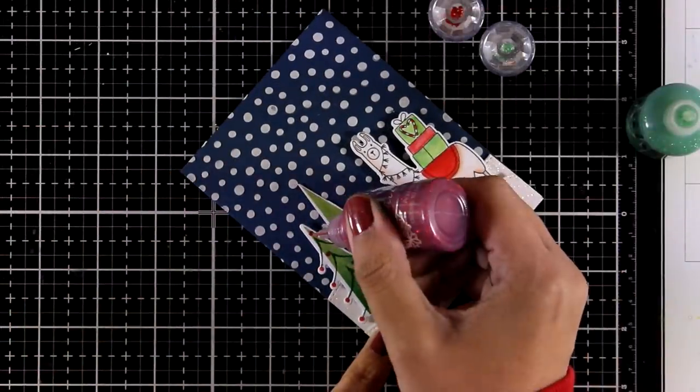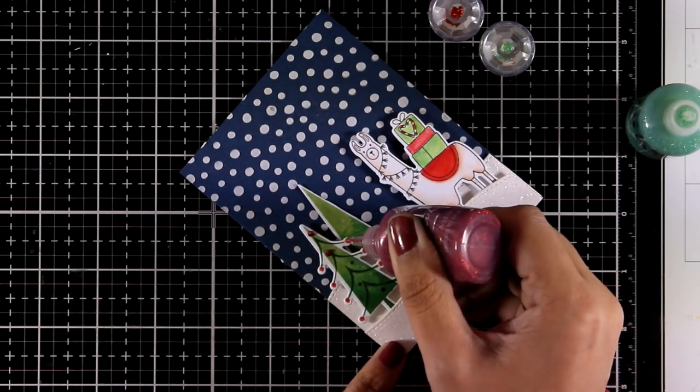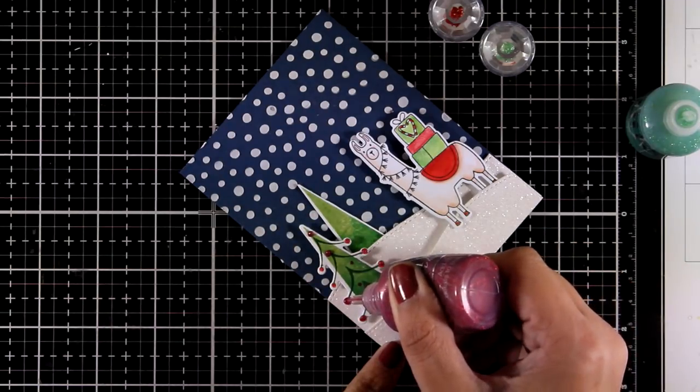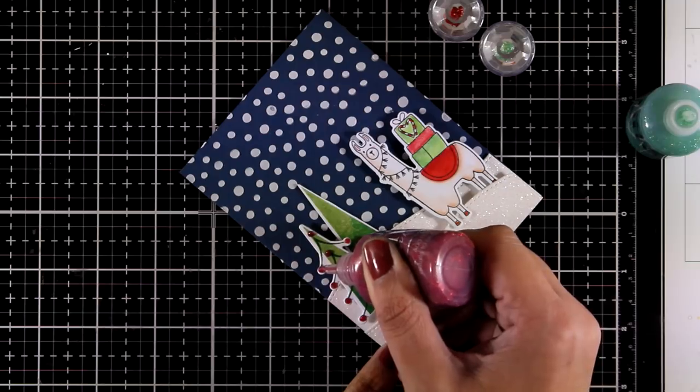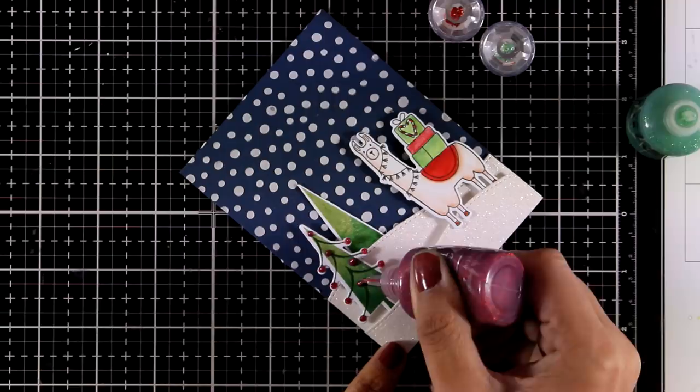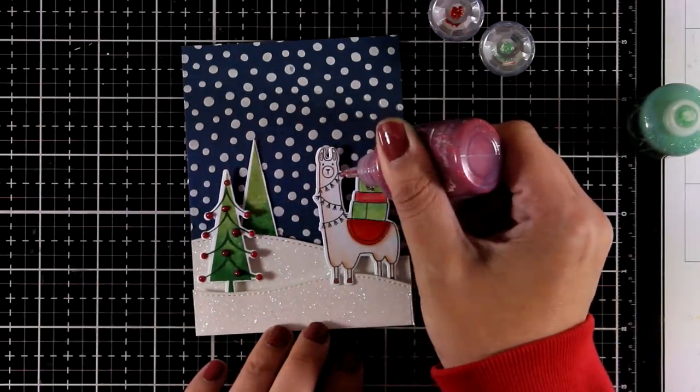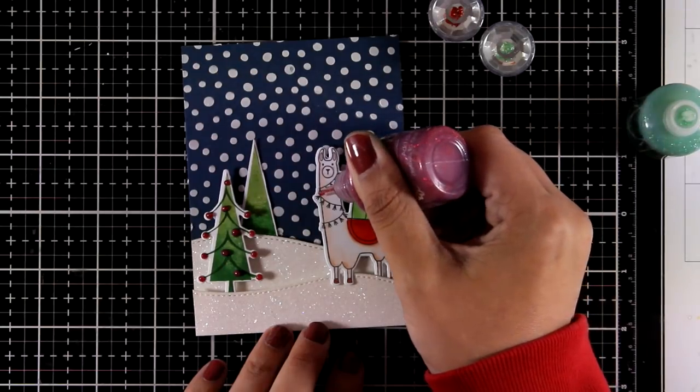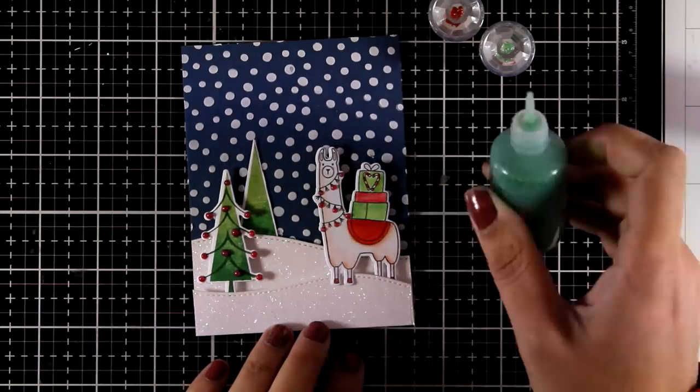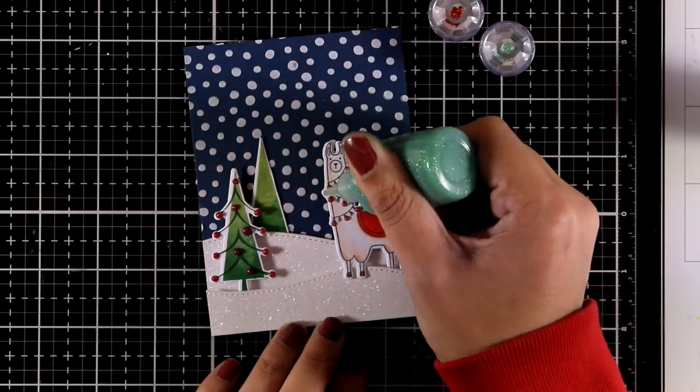Now finally I'm going to embellish my card with some glitter. For that I'm using Nuvo Glitter Drops in green and red, and the actual colors that I'm using are Ruby Slippers and Sunlit Meadow. Just like always there will be a full list of all the supplies that I used for this card down below in the description area on my YouTube channel as well as on my blog. For the little tassels around the neck of my llama I'm going for every other one with red, and for the in-between I'm using the green one.